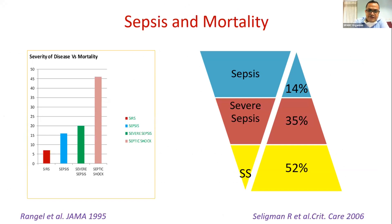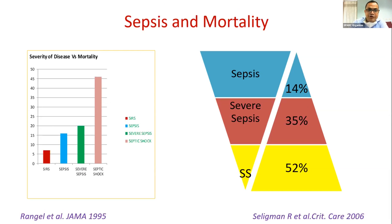As severity increases, mortality increases. As shown in older data, mortality rises exponentially from sepsis to septic shock. If somebody has septic shock, almost 50% mortality is reported in the literature.